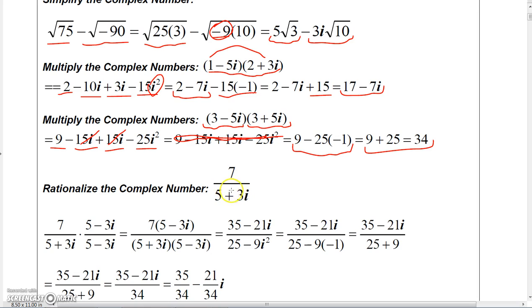So if I want to rationalize 5 + 3i, what I'm going to have to do is multiply it by its conjugate, which would be 5 - 3i. Well, you can't just multiply the denominator by 5 - 3i...